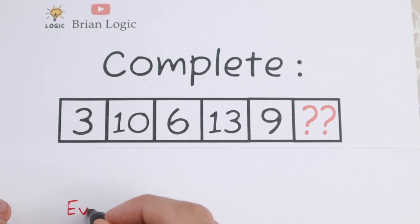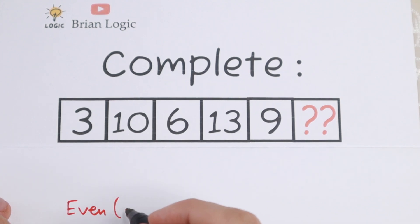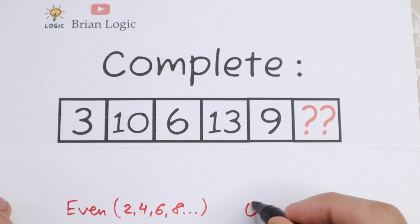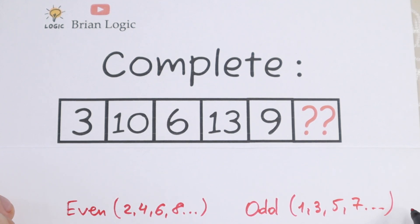We all know that even numbers are 2, 4, 6, 8, and so on. And we all know about odd numbers as well: 1, 3, 5, 7, and so on.